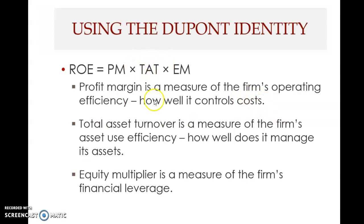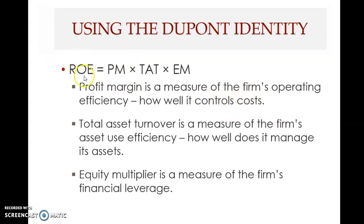The second component, asset turnover, is a measure of the firm's asset use efficiency — how efficiently the company uses its assets. The third component, equity multiplier, is a measure of the firm's financial leverage. All things being equal, the higher the profit margin — meaning the better the firm controls its costs — the higher will be the return on equity, since all three components are directly and positively related.